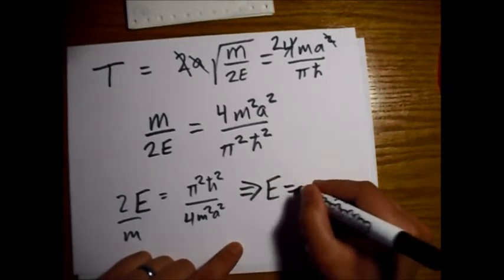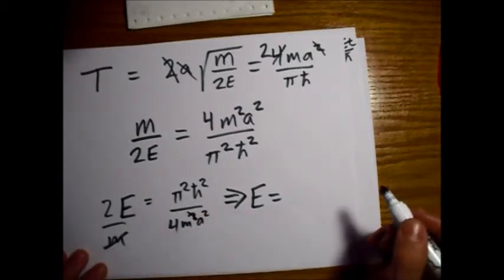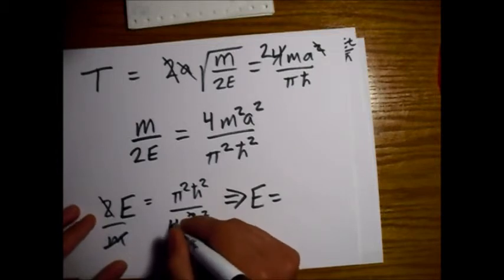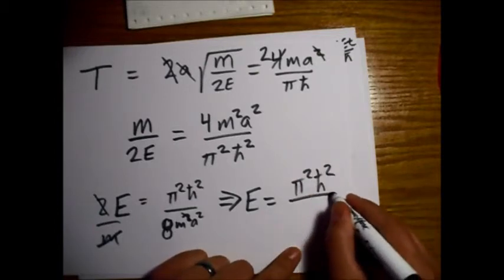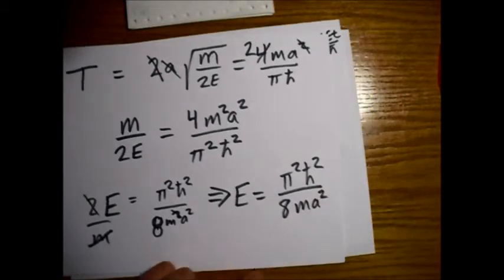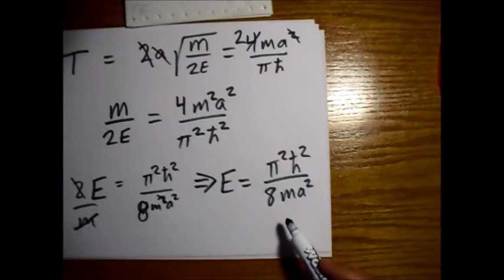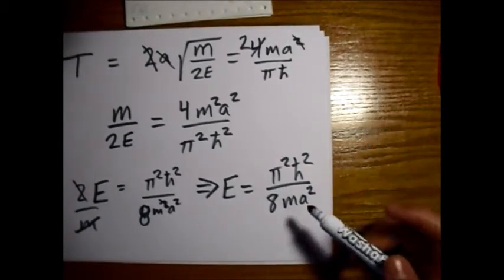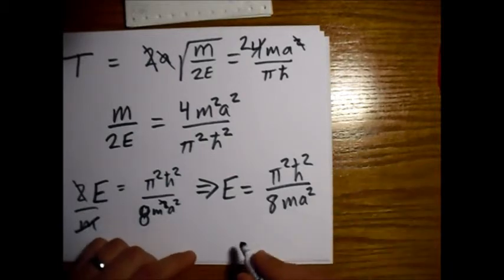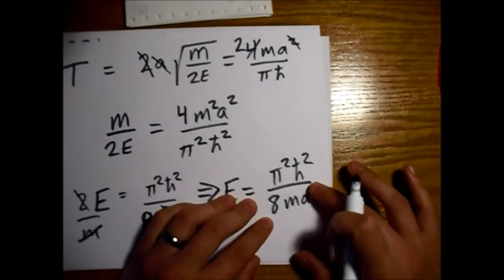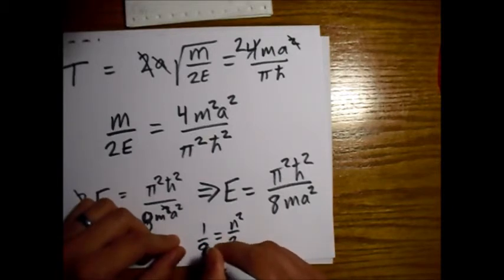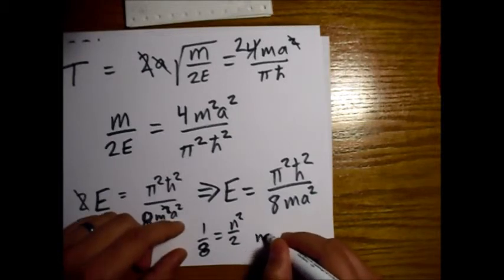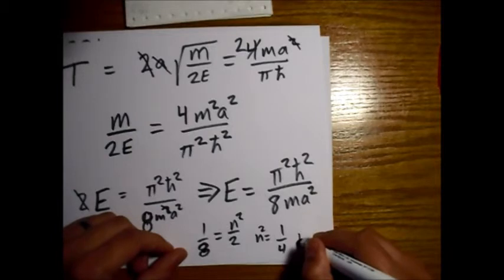Now we'll just flip this over. We'll do this in steps, so pi squared h bar squared over 4m squared a squared. So now we just multiply by m over 2. This gives us e equals, so this m is going to cancel one of those m's, and then we divide by 2 on each side so this 4 turns into an 8. So we have pi squared h bar squared over 8m a squared. So if we compare this to the energies for the infinite square well, we know that with that one all of these parts are the same but instead of a 1 over 8 you have an n squared over 2. So that gives us an n squared of 1 fourth, which gives us an n of 1 half.